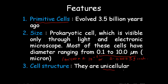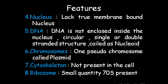Cell structure: they are unicellular. Regarding the nucleus, they lack a true membrane-bounded nucleus. They have a nucleoid. DNA is not enclosed inside a nucleus; it is a circular, single double-stranded structure — a coiled structure called the nucleoid. Chromosome: one pseudo-chromosome, plus plasmid. Cytoskeleton is not present in the cell.